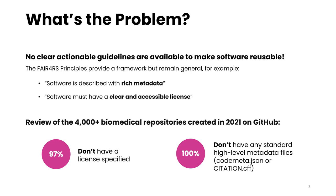It is therefore not surprising that out of the 4,000 plus biomedical related repositories created on GitHub in 2021, 97% did not have a license specified, making them technically non-reusable without potential legal consequences, and also none of them had a standard metadata file included.